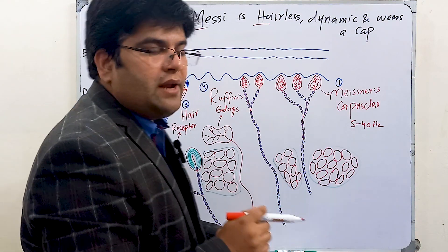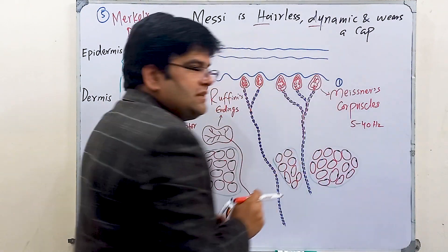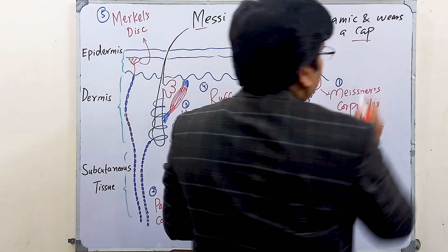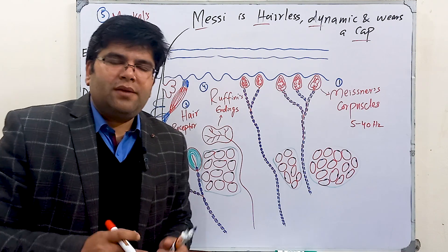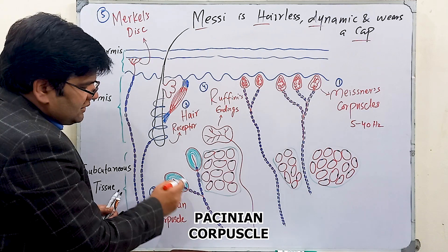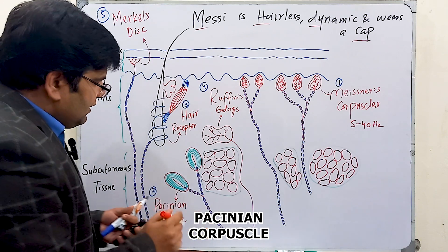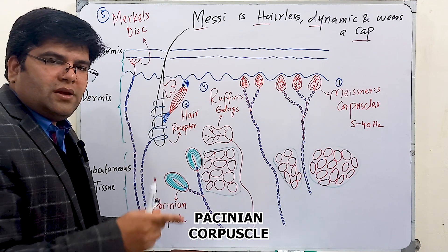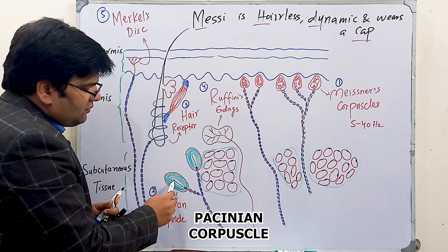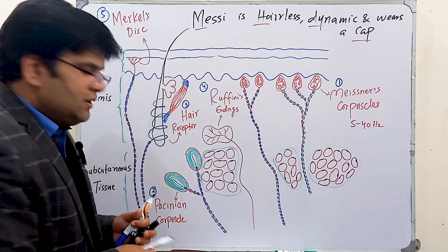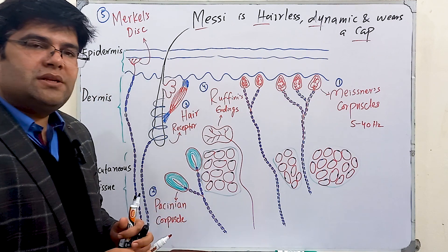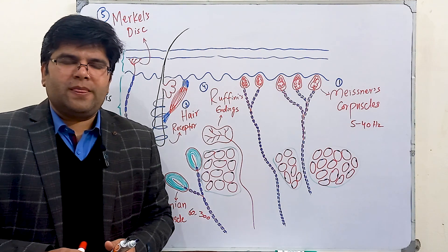These receptors detect vibrations and they are encapsulated receptors. Another important mechanoreceptor present in our skin is the Pacinian corpuscle. Their structure is like the shape of a cut onion — just as we see multiple rings or layers in a cut onion, we can see layers of connective tissue present around the tip of this nerve ending. The distal part of this nerve ending is non-myelinated; after that it is myelinated.